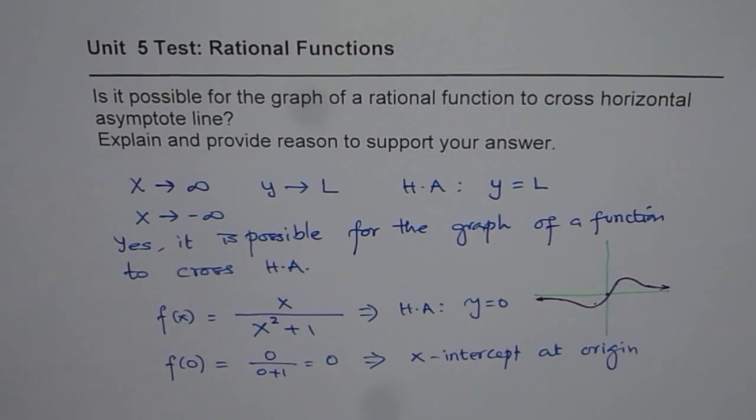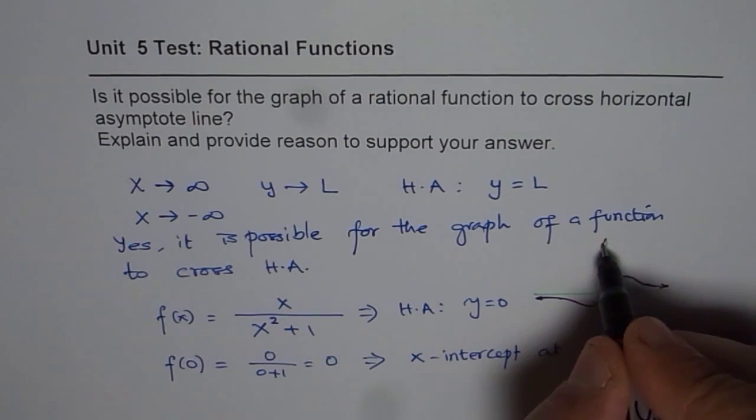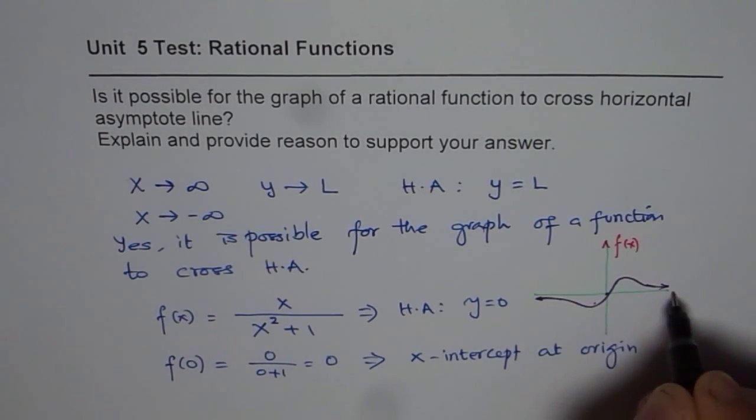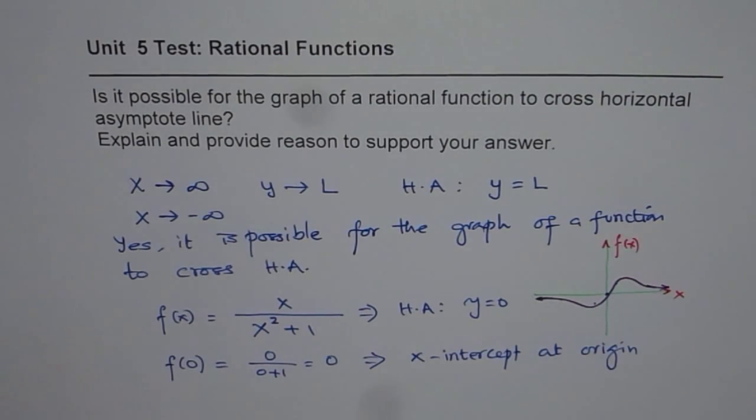But that's a very interesting graph and a good example to show that the graph of a function, in this case f of x, can really cross the horizontal asymptote. So I hope that helps to understand the concept. And the reason is that horizontal asymptote is defined at the ends. End, that means infinity or minus infinity. In between, the graph could go either way. I hope that helps to understand the concept.